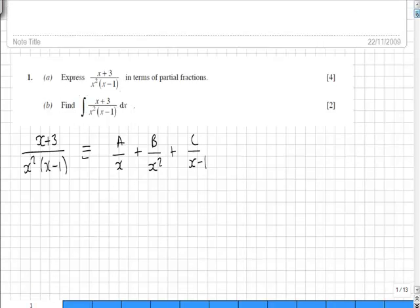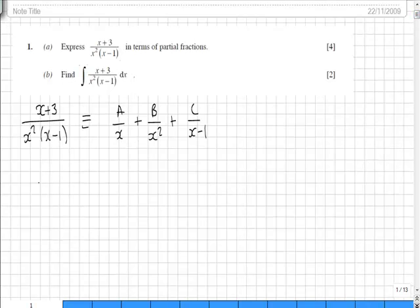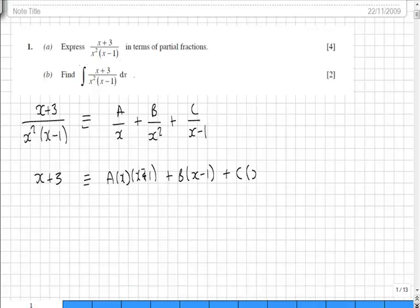Once we have that, we multiply through by x squared times x minus 1 to give us x plus 3 equals A times x times x minus 1 plus B times x minus 1 plus C times x squared.